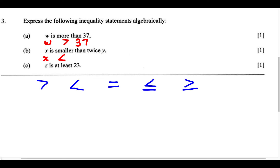What does "twice Y" mean? Well, twice means two. So we're going to write 2 and we have the variable Y, giving us 2Y. So "is smaller than" is represented by the less than symbol, and we write X < 2Y.